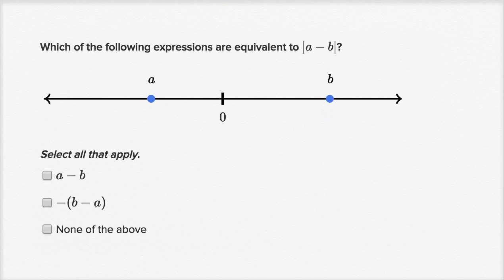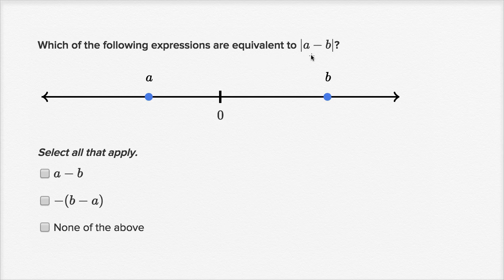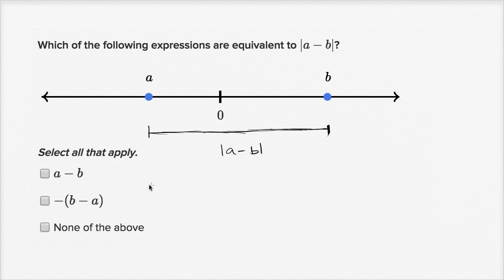Let's do several more of these. Which of the following expressions are equivalent to the absolute value of a minus b? Once again, the absolute value of a minus b is the distance between a and b — that is this distance right over here. The first choice is just a minus b without the absolute value. We see that a is less than b; in fact, a is negative and b is positive. So if you take a negative number and subtract a positive number from it, you're going to get a negative number — this thing is going to be negative.